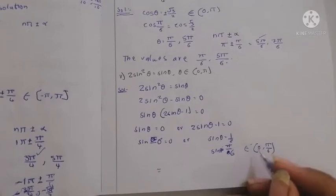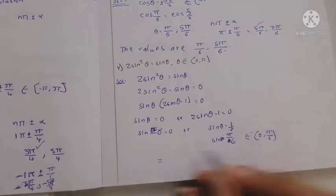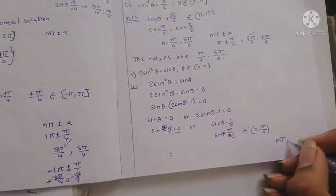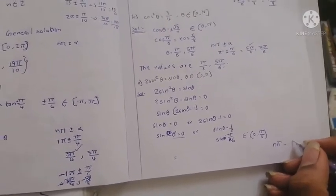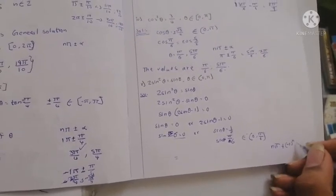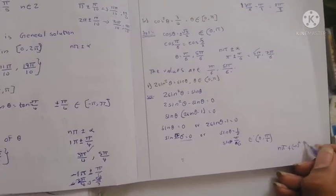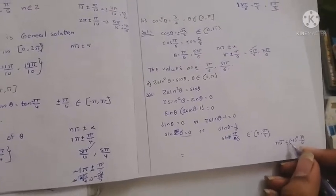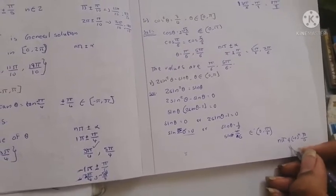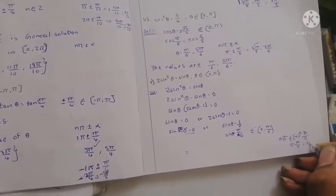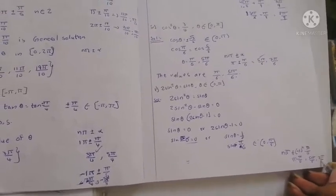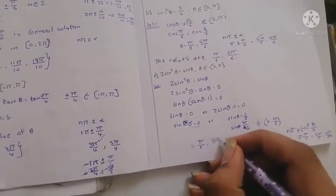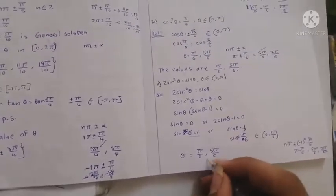When sinθ = 0 it's satisfied at 0, but the question gives an open interval so 0 is excluded. For 2sinθ - 1 = 0: sinθ = 1/2, satisfied by sin(π/6) = 1/2. Using n=1 in nπ + (-1)ⁿ(π/6) gives π - π/6 = 5π/6. The values are π/6 and 5π/6.